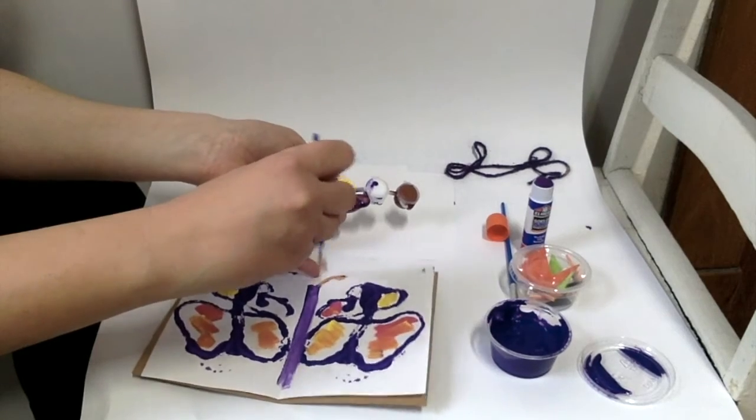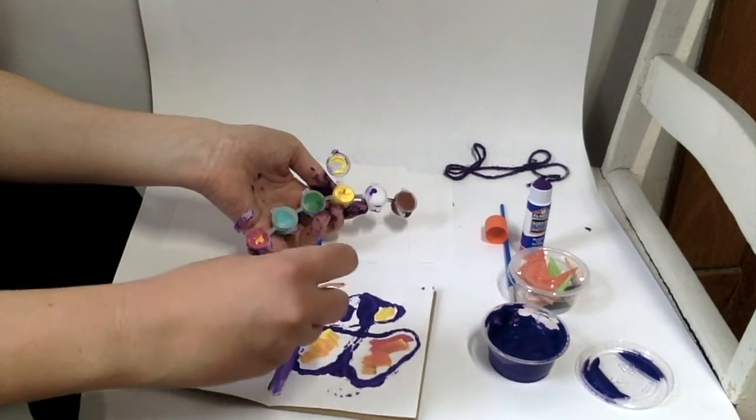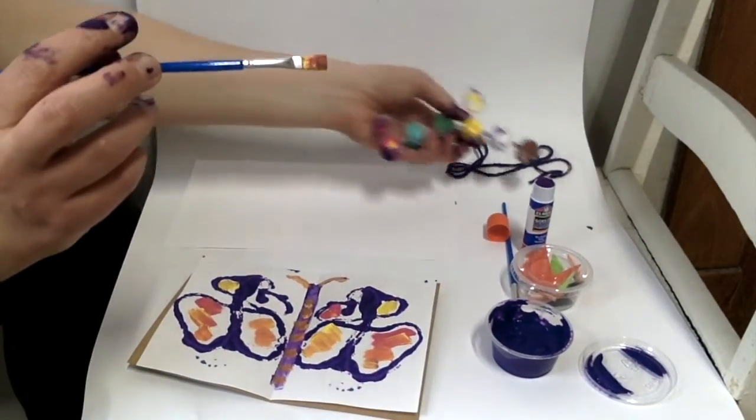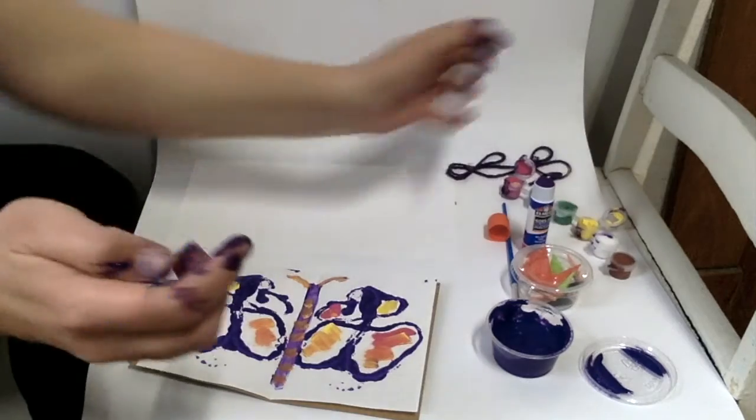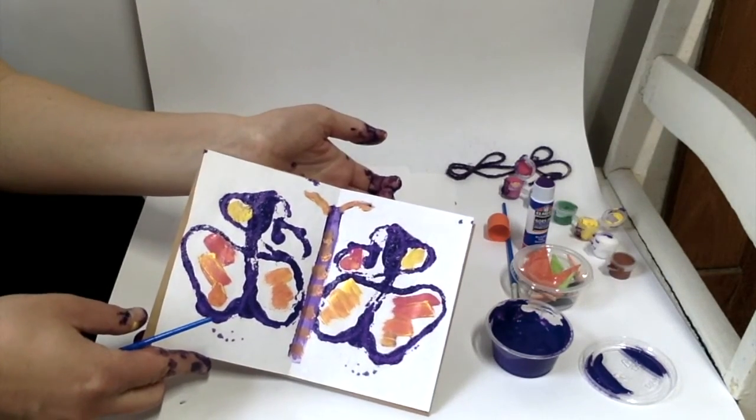And then if you want to add some little antennas, something else to the body of your butterfly. There's really no way to mess it up. Then you can put it somewhere to let it dry a little bit.